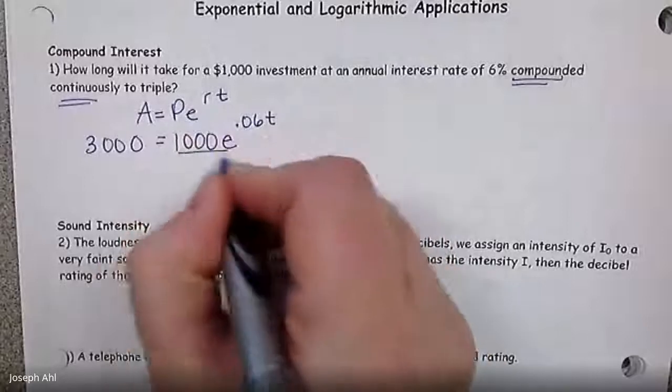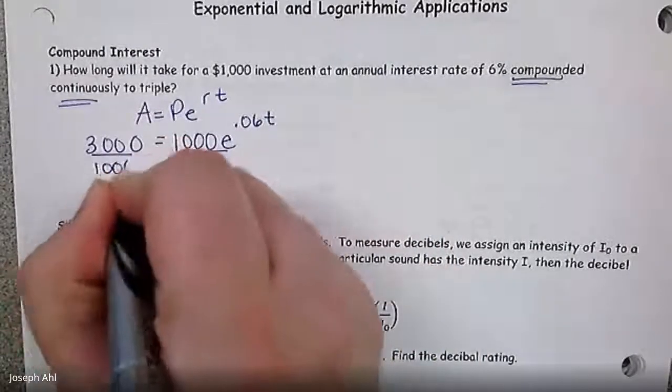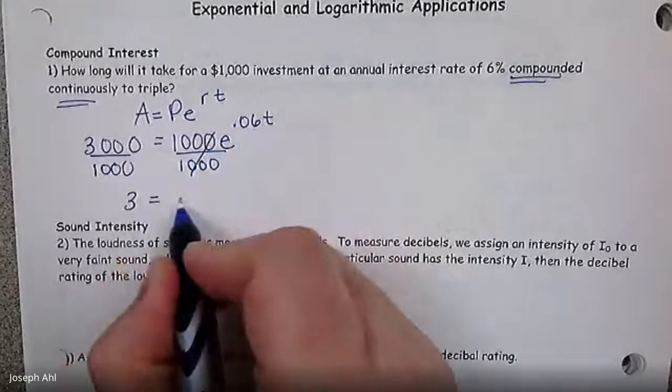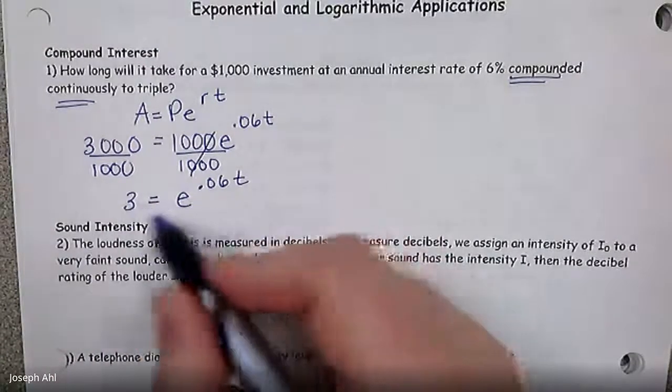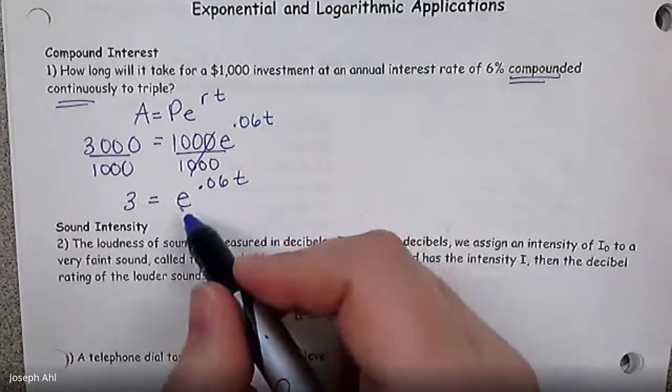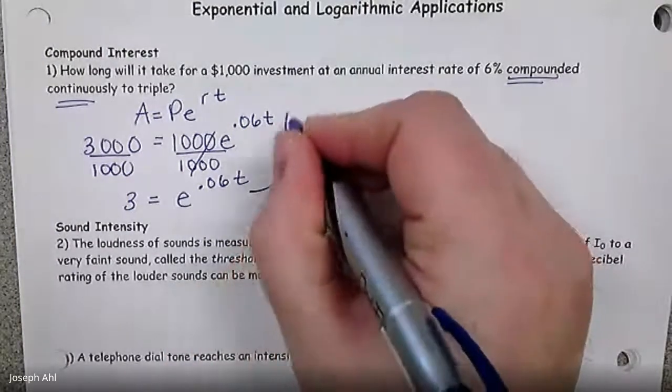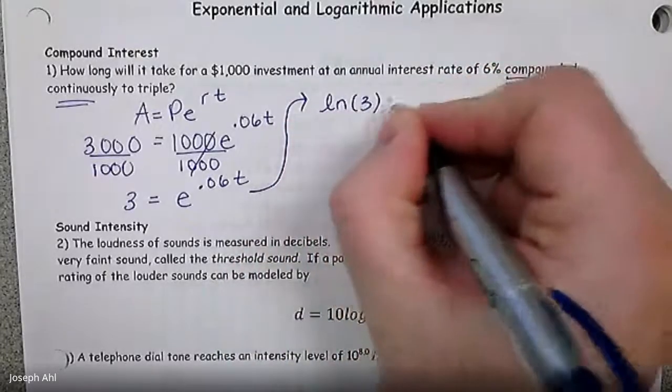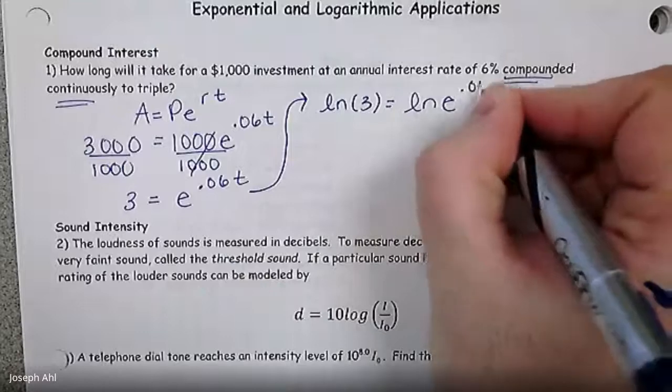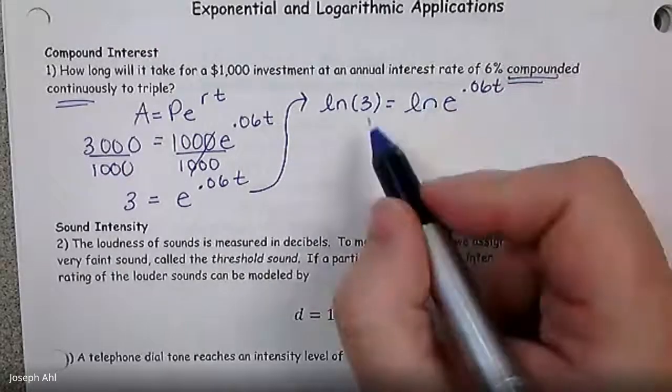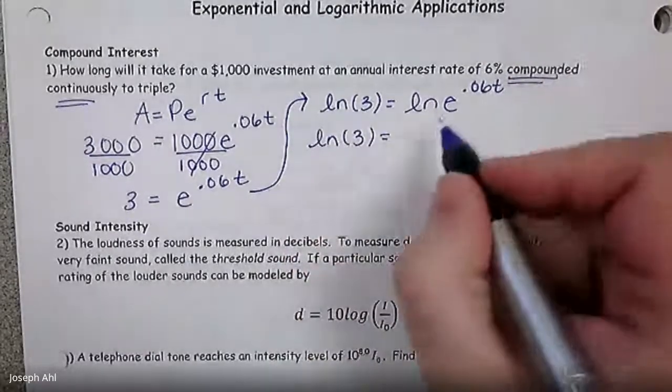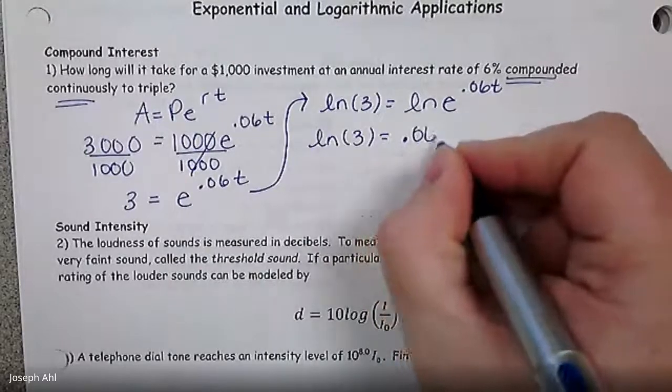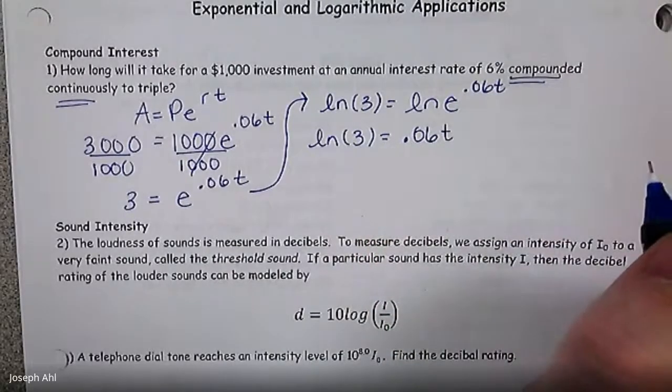So to do this, the first thing you have to do is isolate the base of E, so divide both sides by a thousand. So we're going to wind up getting that three equals E to the point zero six T, so that was kind of a quick step to isolate the base. Once you've isolated the base, now think about how do we solve when we have E to a power? Well the inverse of the base E is going to be the natural log ln. So I'm going to take the ln of both sides, just like we do if we're finding inverses.